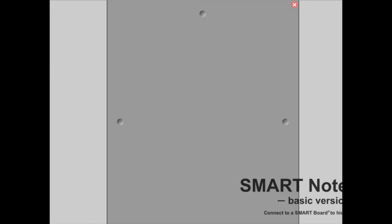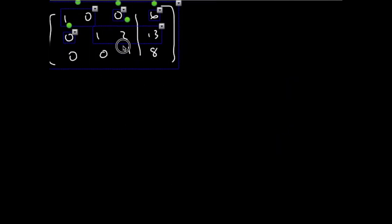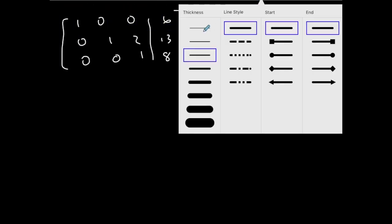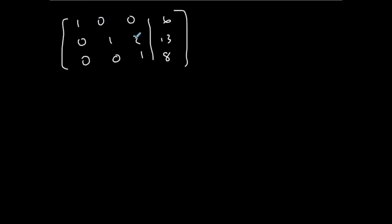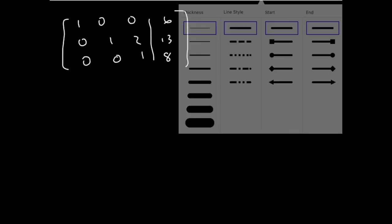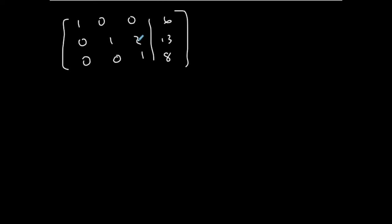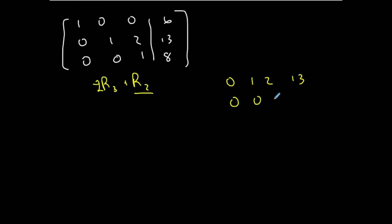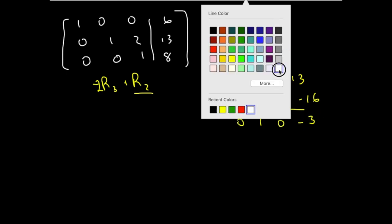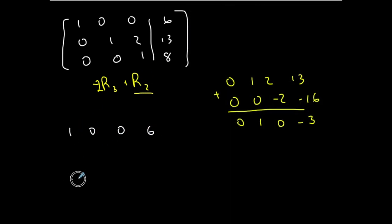Almost there — I need to zero out the entries above the third pivot. I'm going to take negative 2 times row 3 and add it to row 2. Row 2 is 0, 1, 2, 13; adding 0, 0, negative 2, negative 16 gives 0, 1, 0, negative 3. Row 1 stays as 1, 0, 0, 6. Row 3 stays as 0, 0, 1, 8.